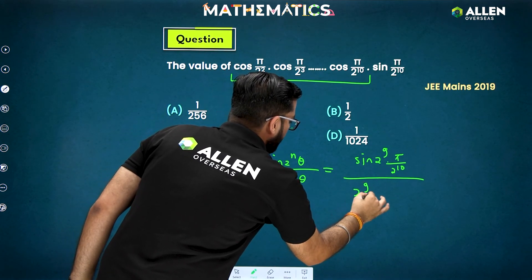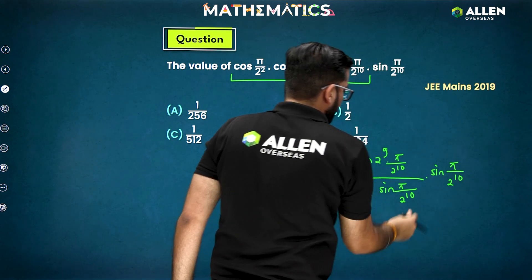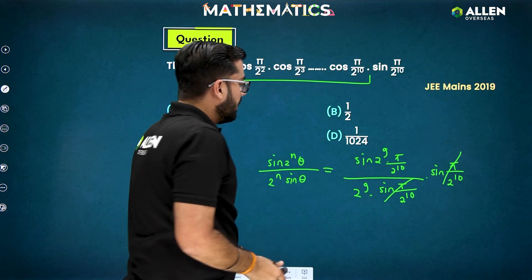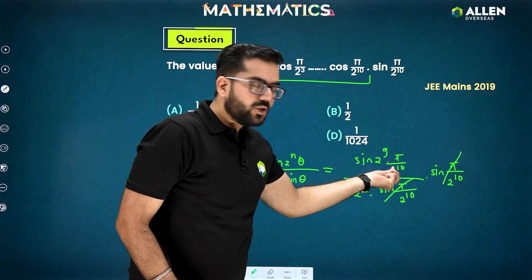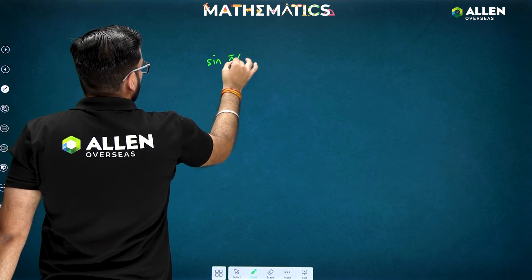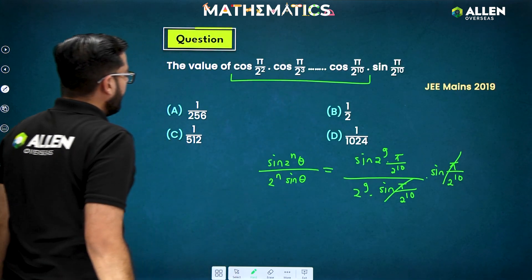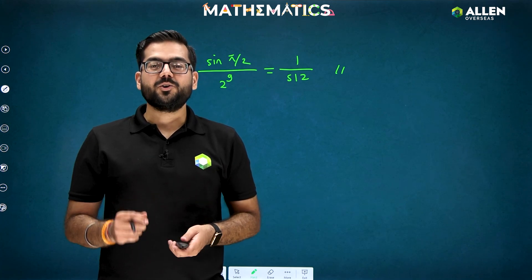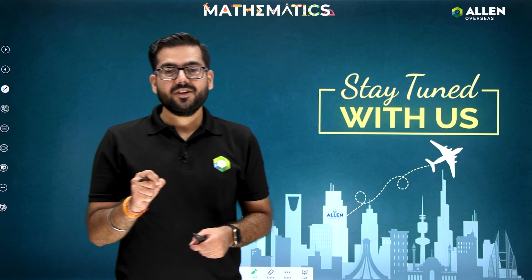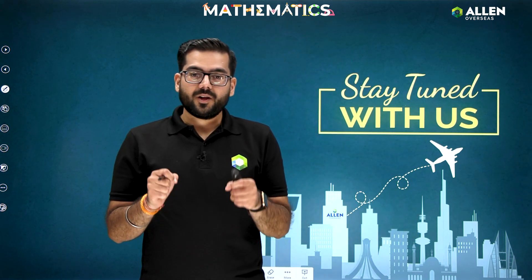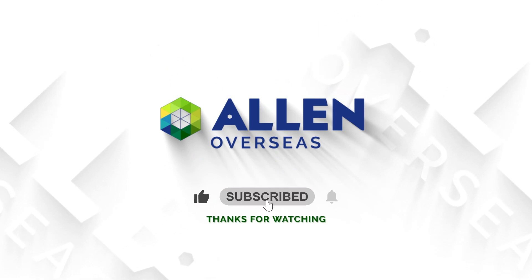In the denominator we have 2⁹ · sin(π/2^10), and we also multiply by sin(π/2^10) from the question — those cancel. So we get sin(2^10 · π/2^10) / 2⁹, which simplifies to sin(π) — wait, sin(π/2) = 1. So the numerator becomes sin(π/2) = 1, and the denominator is 2⁹ = 512. Therefore the answer is 1/512, which is option C. That's all from my side — don't forget to watch the complete series, the playlist link is in the description. Thank you!